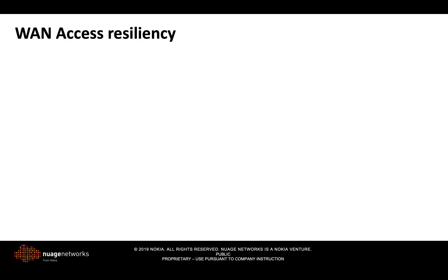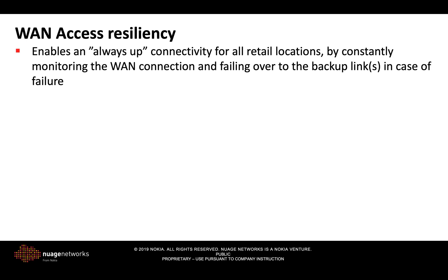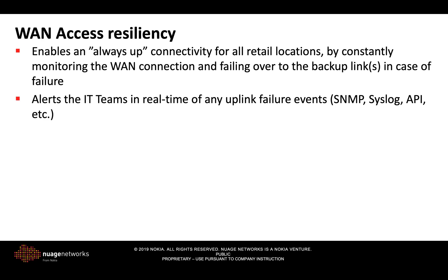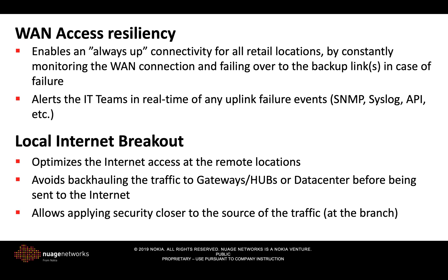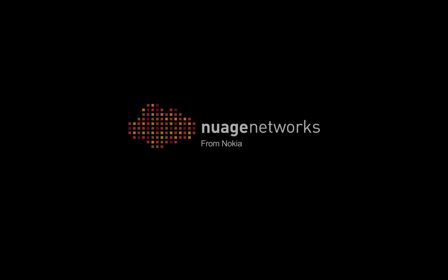We have seen today the demonstration of two features actively employed by our retail business customers. The first is One Access Resiliency, which enables continuous connectivity for all retail locations — connections are constantly monitored and in case of a timeout, IT teams are immediately alerted so that appropriate action can be taken. The second feature is Local Internet Breakout, which optimizes internet access at remote locations by avoiding internet traffic tromboning, greatly improving latency and allowing security to be applied closer to the source. This concludes the presentation. For more information on retail business solutions provided by Nuage Networks, please check the links in the description and stay tuned for the following presentations.